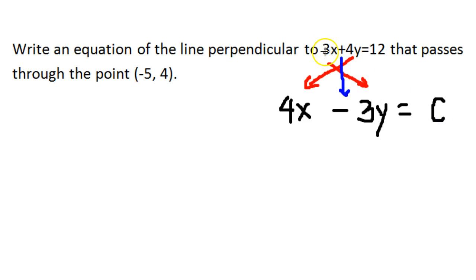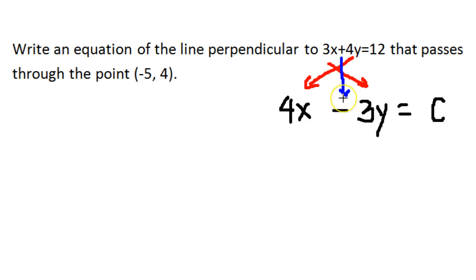We took the coefficient of x in the original equation, and it becomes the coefficient in front of the y. We took the coefficient that was in front of the y in the original equation, and it becomes the new coefficient of x, and then we switched the sign. Now that process is the same as making the negative reciprocal of the original slope.